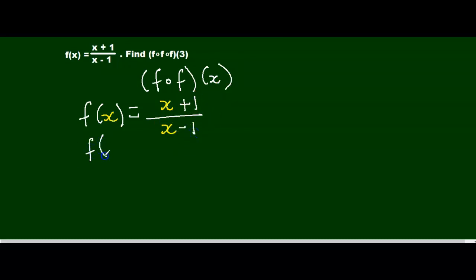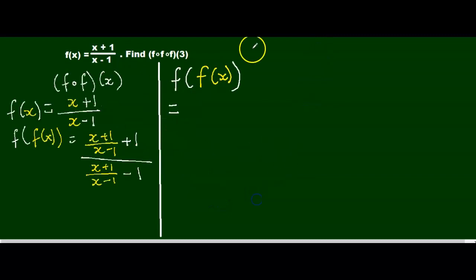f of f of x means each of your x terms now becomes x plus 1 over x minus 1. So that's x plus 1 over x minus 1, all over x plus 1 over x minus 1 minus 1. Okay, let's simplify.